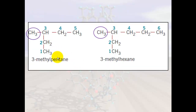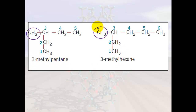Here are some examples. The longest carbon chain is one, two, three, four, five carbons, and the methyl group is on position three, so it becomes 3-methylpentane. In another example, the methyl group is again on position three but there are six carbons, so it's 3-methylhexane.